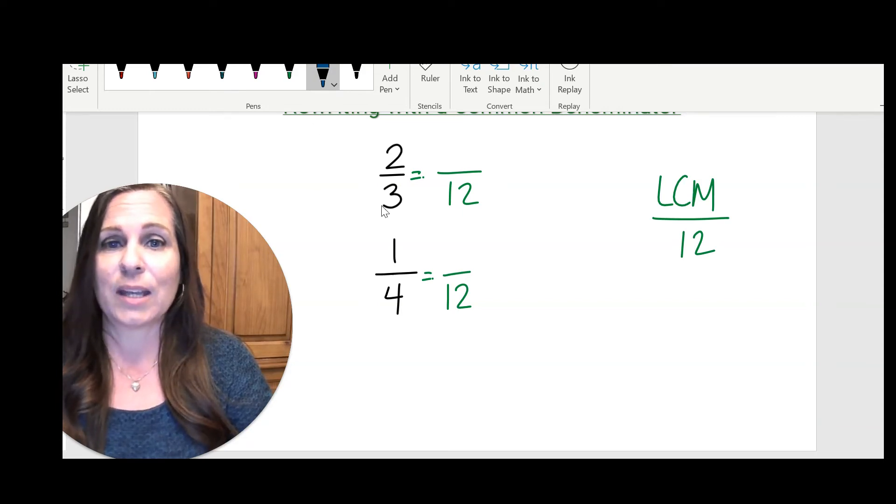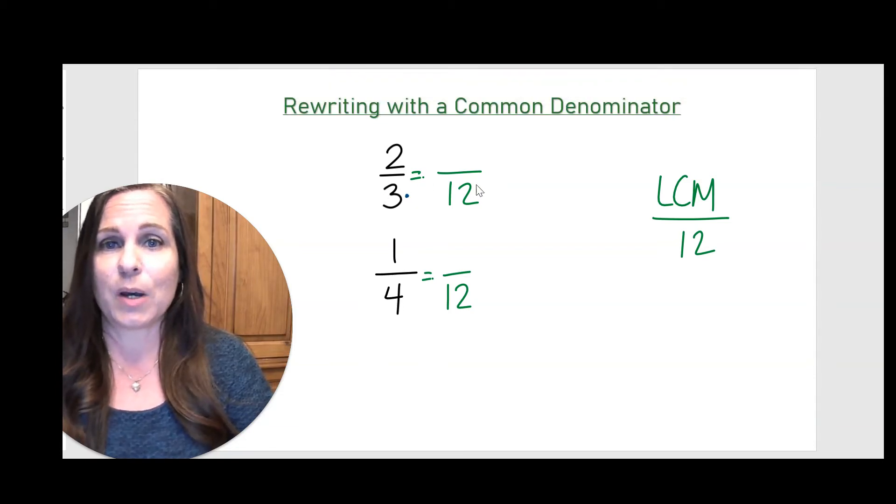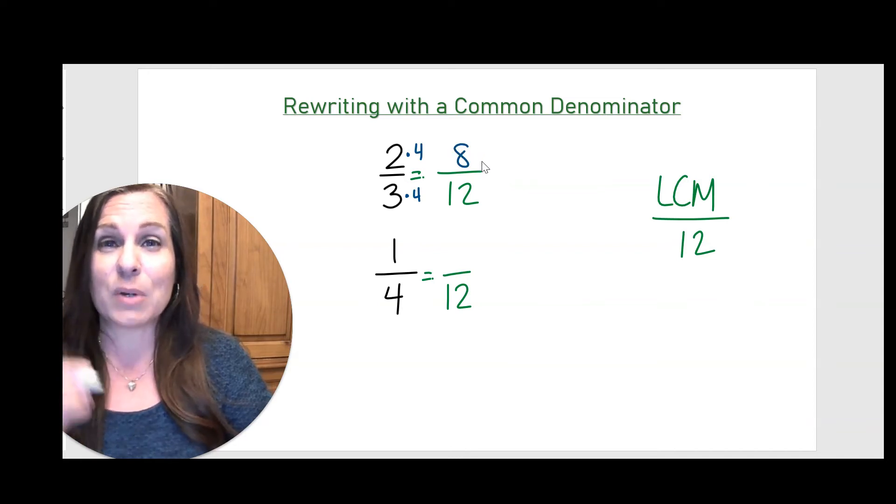So looking at my denominators for the first fraction, three times what would give me 12? Four. So I have to multiply by the same number on top. When you create equivalent fractions, it's really important that you multiply by the same number on the top and the bottom.